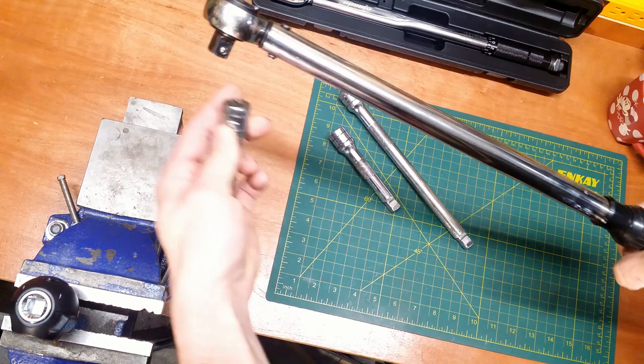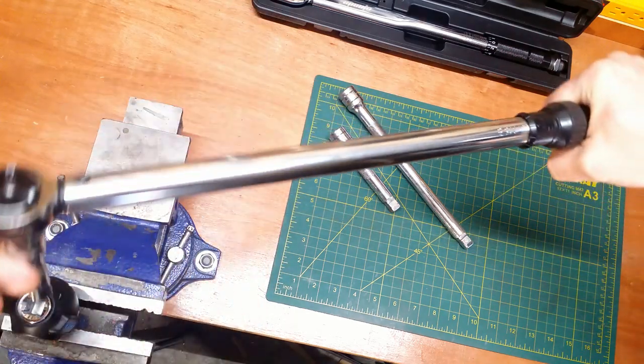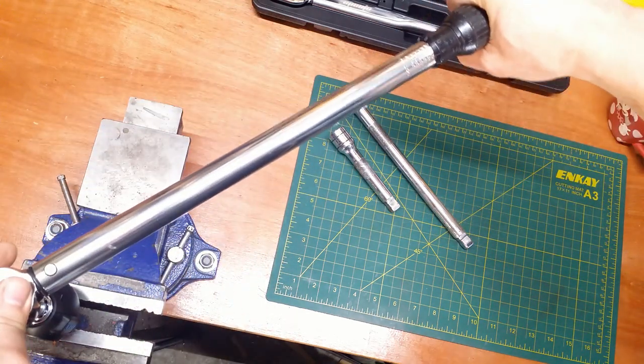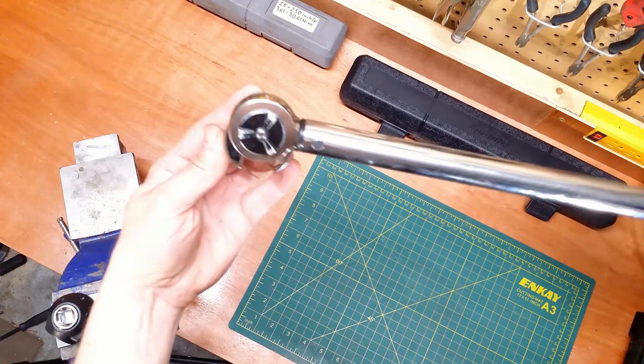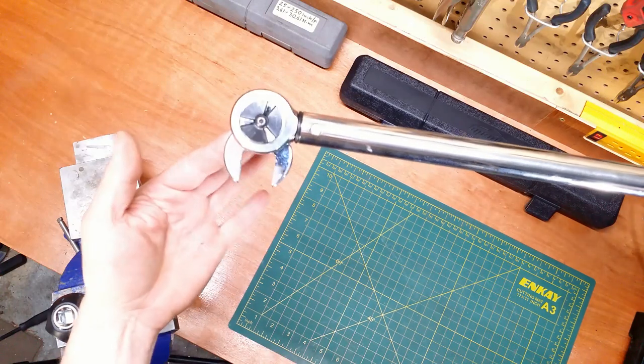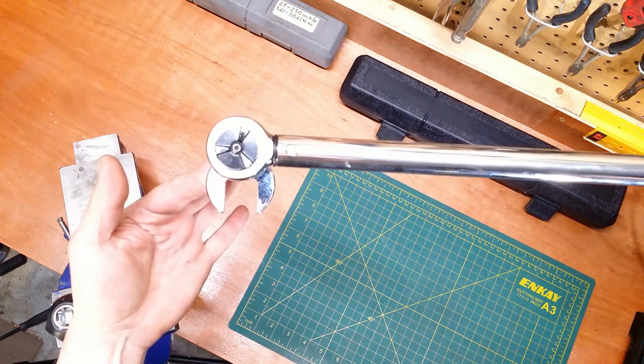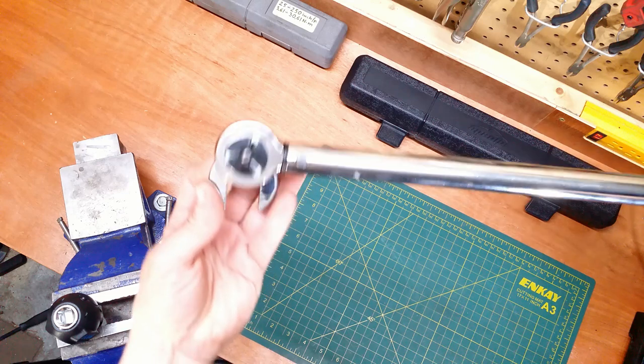That using extensions in the axis of rotation will not alter the torque. That using extensions elongating the wrench may change the torque delivered compared to the torque set on the torque wrench.